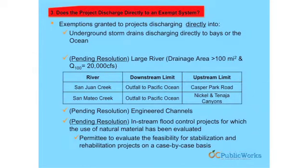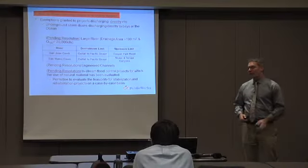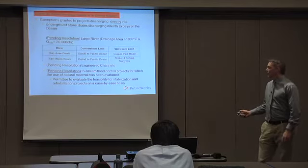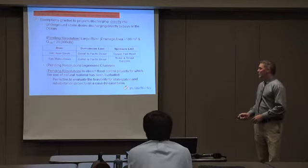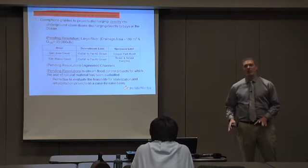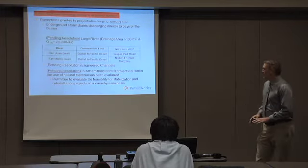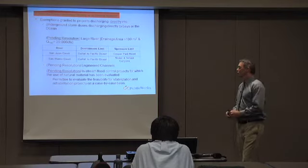The exemption we're trying to rectify is the large river exemption — that's a drainage area of 100 square miles and a 100-year design storm of 20,000 CFS. In South Orange County, we only have essentially two systems that would meet those criteria: San Juan Creek, from Casper Park Road up in the ranch plan area all the way down to the Pacific Ocean, and San Mateo Creek from Nickel and Tanaja Canyons all the way to the ocean. We're still hoping engineered channels might be part of this and will push the argument that there is no impact based on the design of those channels — we'll see where that goes.